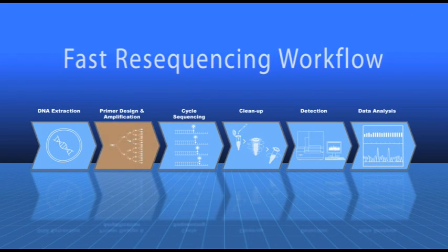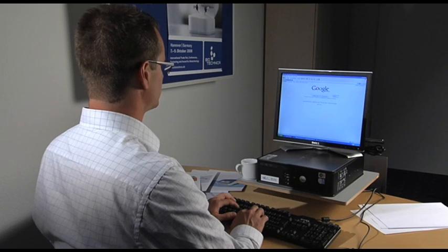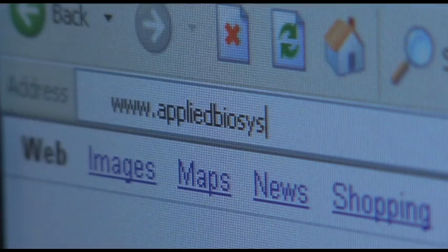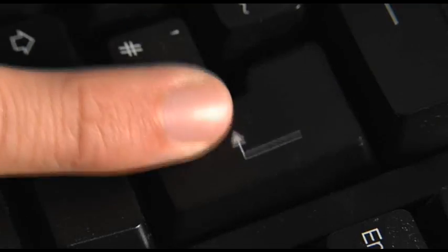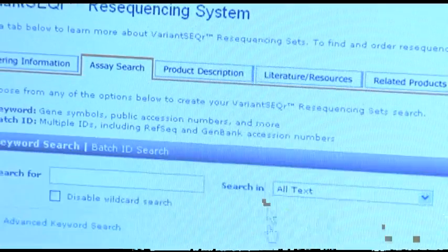The step after DNA extraction in Applied Biosystems fast resequencing workflow is to amplify the DNA section that has potential mutations with a dedicated fast PCR system. The selection of specific primers is crucial for success.